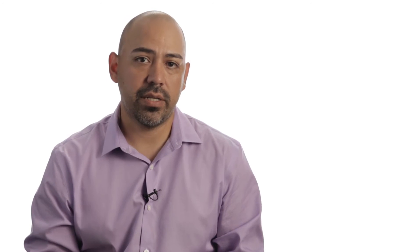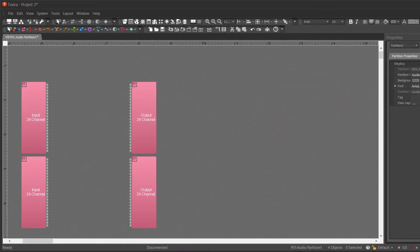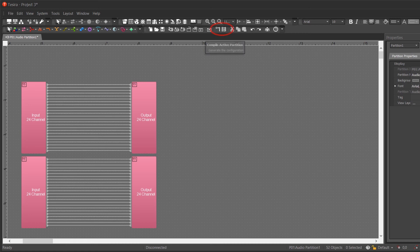Now, let's look at how our compiler enables implicit AVB routing natively. In this example, we are still creating a 48 by 48 channel digital snake, but instead of using AVB.1 blocks, we will simply drop in the input and output blocks, connect each signal path, and hit compile.